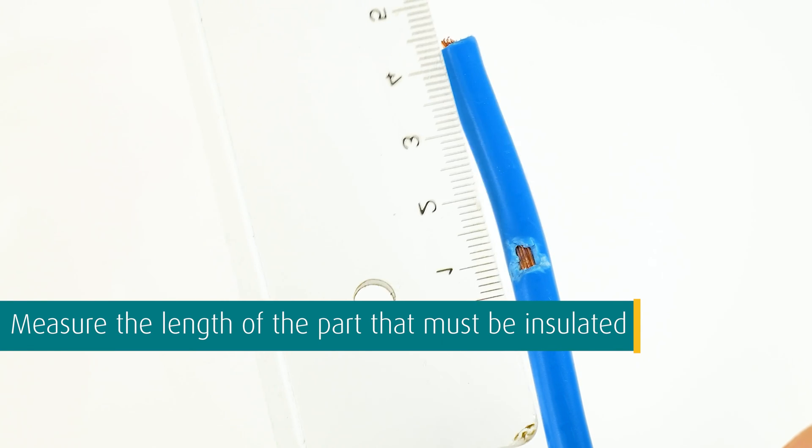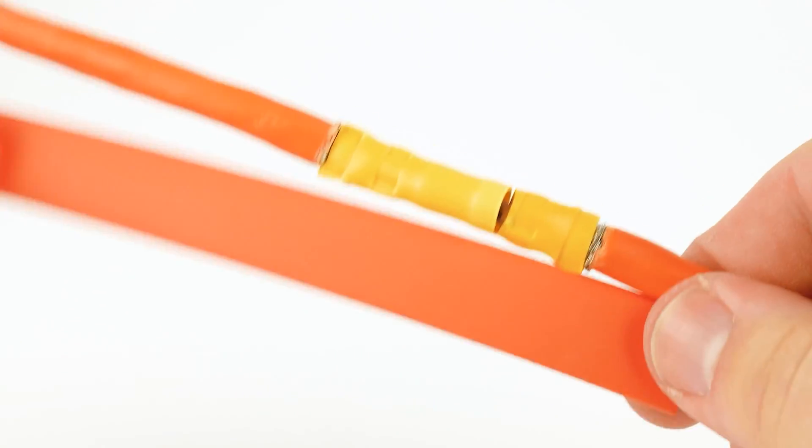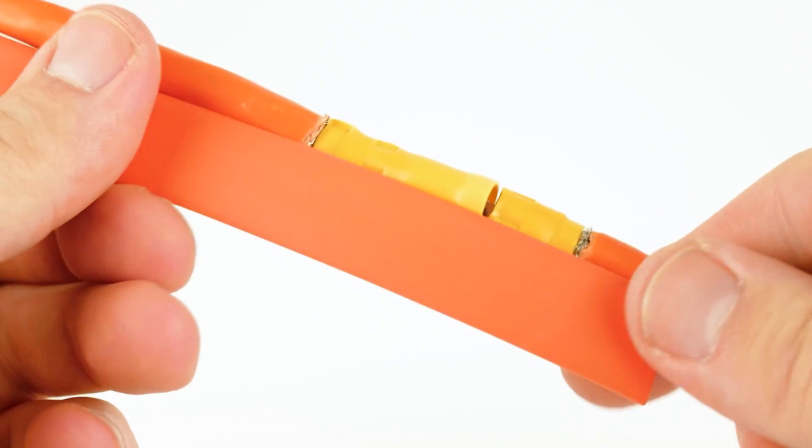Measure the length of the part that must be insulated. Keep in mind that your insulation by the heat shrink tube should already start around the cable sheath.